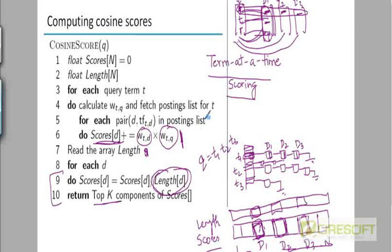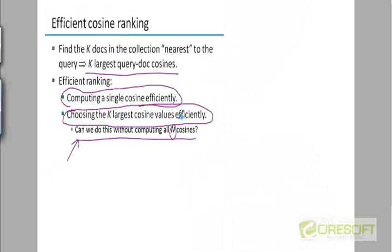This pseudo code can be slightly simplified by just making this into a 1. With this simplification, w of t comma q will be 1. So this pseudo code becomes slightly simpler.